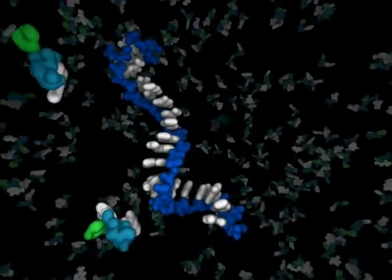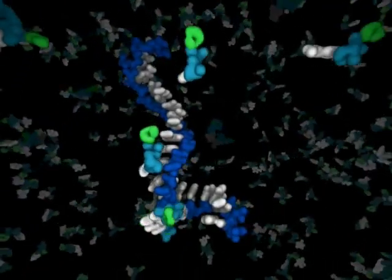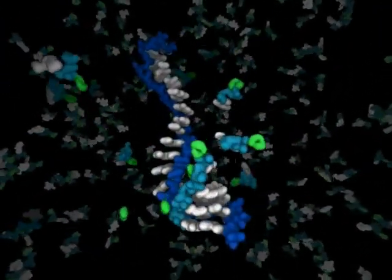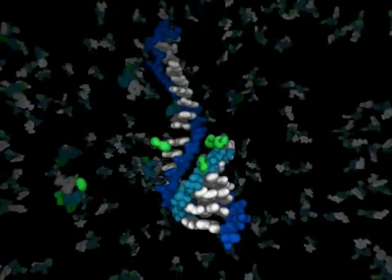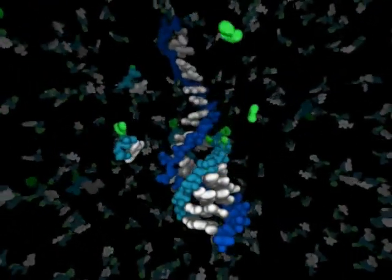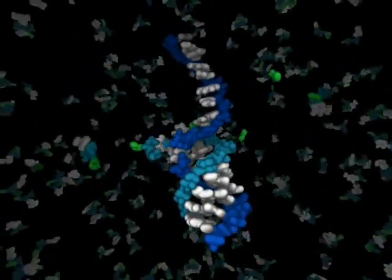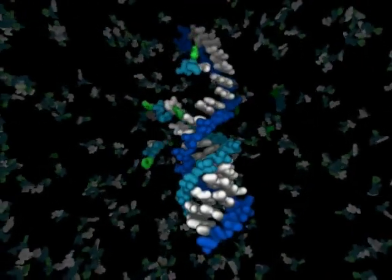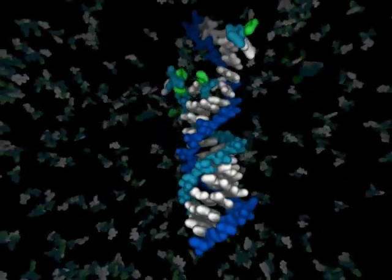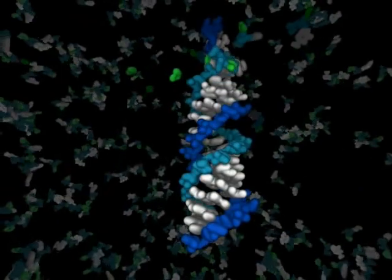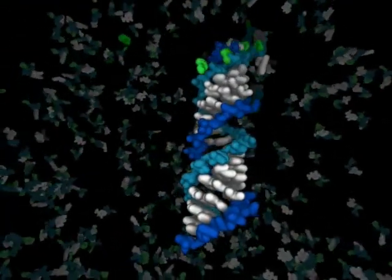This animation shows a mechanism by which RNA is replicated in a non-enzymatic manner. Single nucleotides find their complementary base on the template strand and undergo a chemical reaction to form a polymer. This reaction is possible because the nucleotides have been chemically activated so as to increase their reactivity.